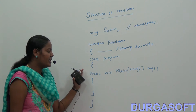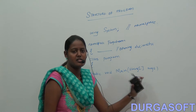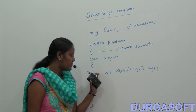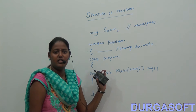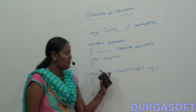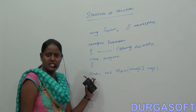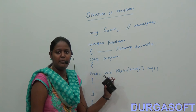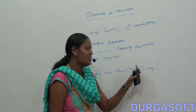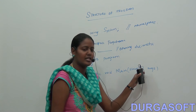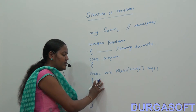Inside the class, you will have again an opening delimiter. Next, 'static void main(string args)' — here, 'static' is the keyword, 'void' is the return type, and 'main' is the function name. Inside that, you will be having the string argument.